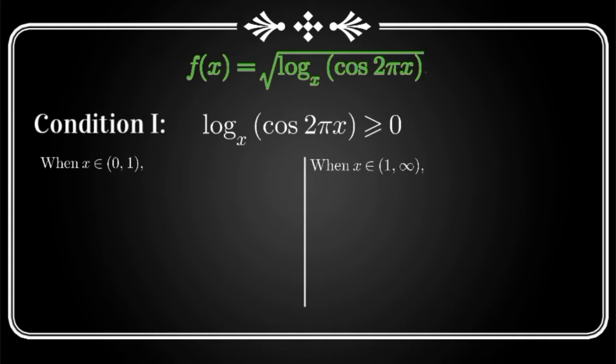Let's first discuss the first case. When the x is from 0 to 1, then first of all let's write our inequality that is log of cos 2πx to the base x is greater than or equal to 0. Now let's take antilog. So it would look like cos 2πx is less than or equal to x raised to 0. Now any real number to the power 0 is 1, right? So we can write this as cos 2πx is less than or equal to 1.